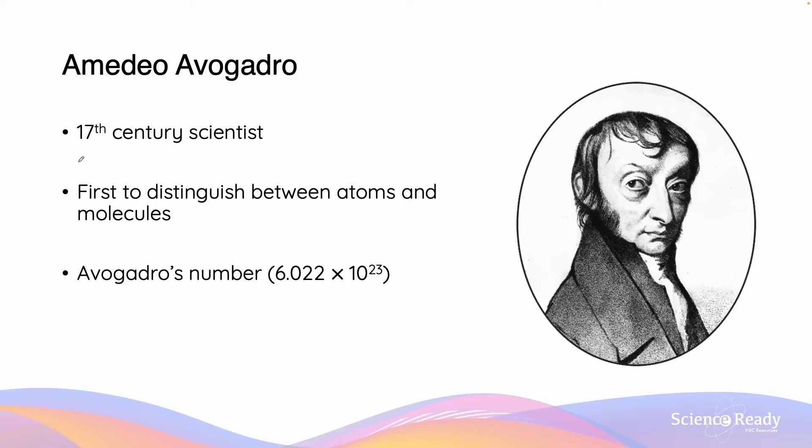Amedeo Avogadro was a 17th century scientist who was famed because he is the first to distinguish between atoms and molecules. He is also known for developing Avogadro's number which is 6.022 times 10 to the 23, and that's defined as being the number of particles which make up a mole. Avogadro's contributions however also include his formation of the individual gas law, the Avogadro's law.